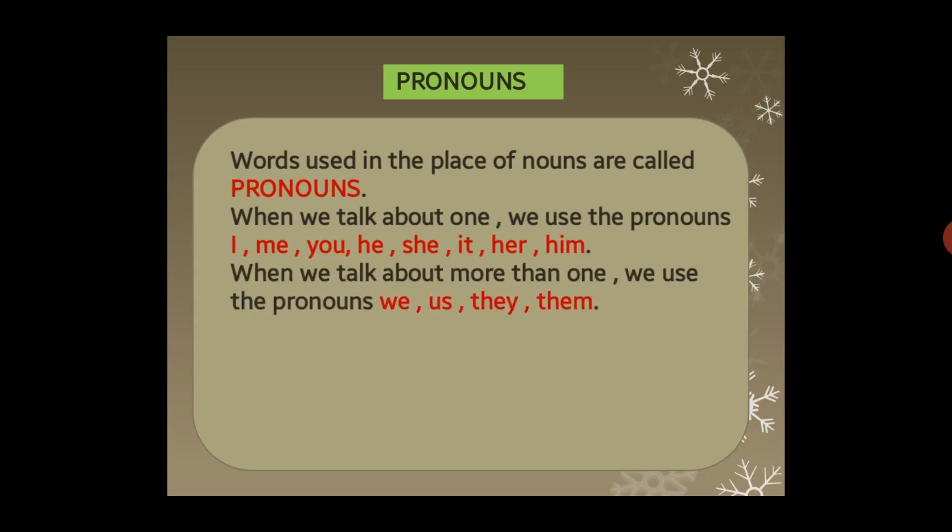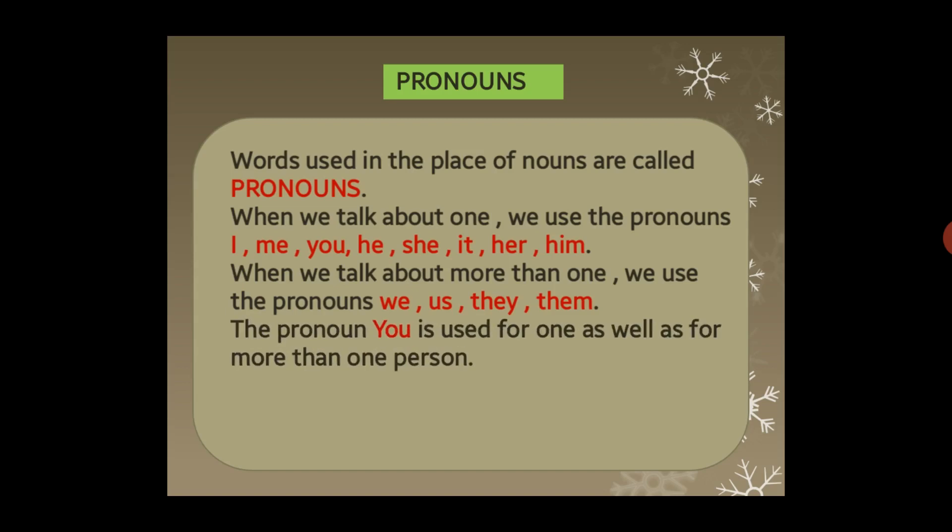When we talk about more than one — plural — we use pronouns like: we, us, they, them. 'We' means you and somebody else. 'They' is used when talking about somebody else as a third person. The pronoun 'you' is special — it can be used for both singular and plural, for one person or more than one.